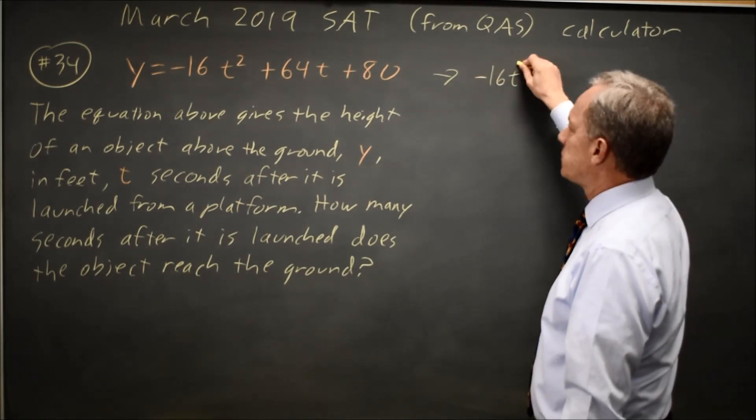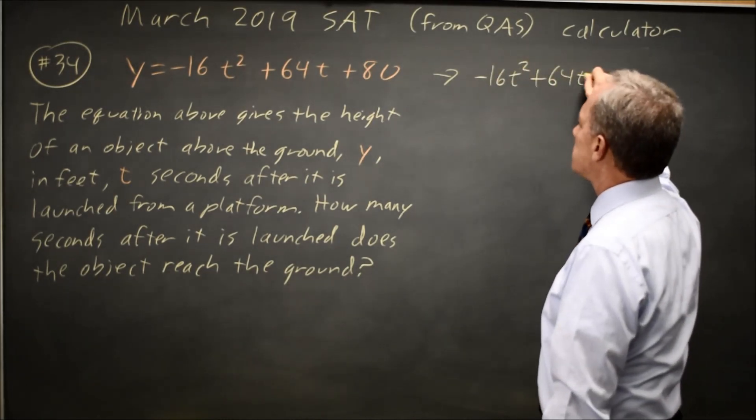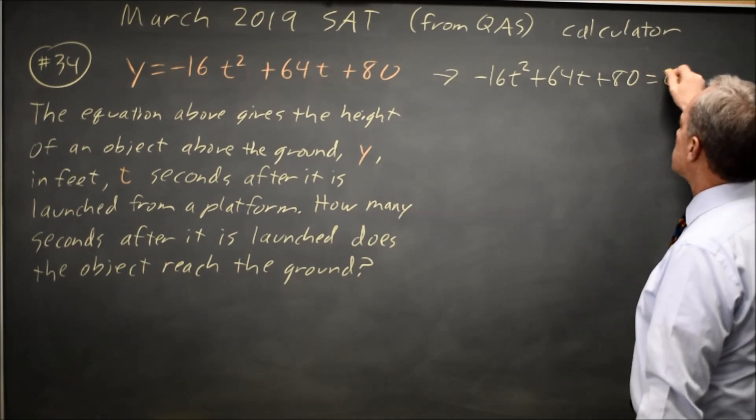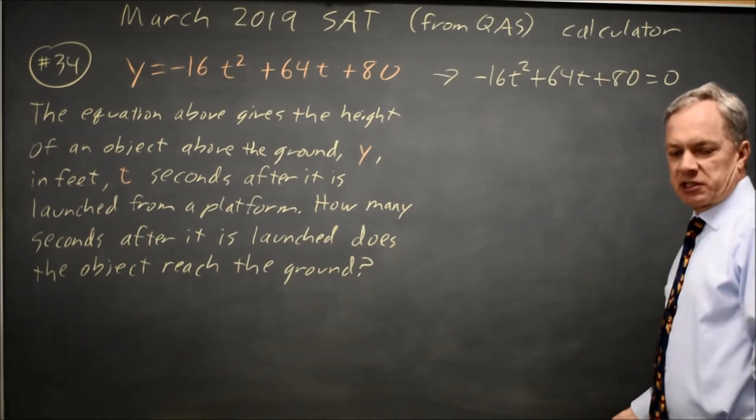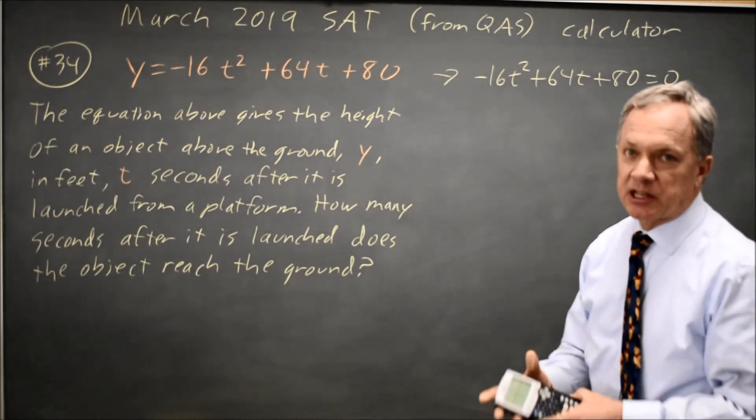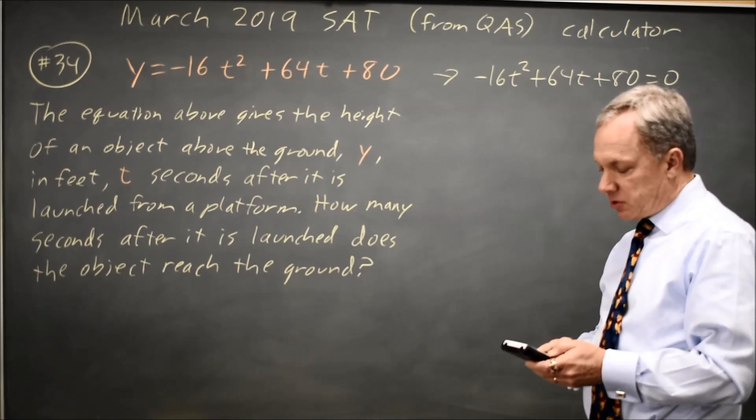Negative 16t squared plus 64t plus 80 equals 0. If I were sensible, I would solve this on the calculator. Enter that expression into y equals.